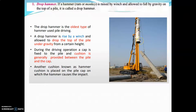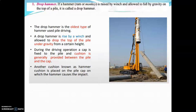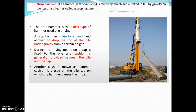The drop hammer is the oldest type of hammer used for pile driving. A drop hammer is raised by a winch and allowed to drop on the top of the pile under gravity from a certain height. During the driving operation, a cap is fixed to the pile and a cushion is generally provided between the pile and cap. Another cushion is placed on the pile cap on which the hammer causes the impact.